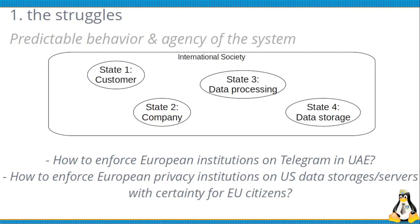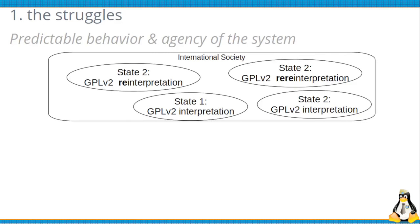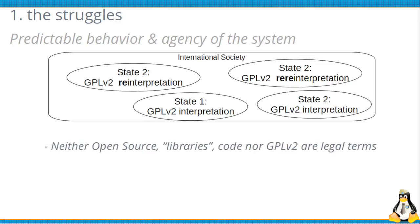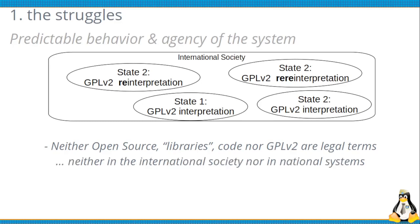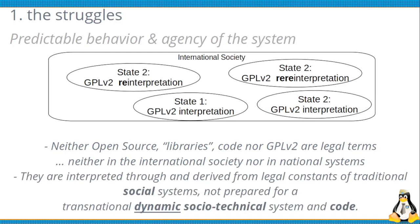We can tackle each one of these individually, but finally there's an architectural flaw. It's comparable to how GPL version 2 can be interpreted differently in different states, and also differently within a single state, because these are not precise legal terms — they are ambiguous and can be interpreted in different ways by a judge. They are not integral to any state, and they are interpreted and derived from the legal constructs of the traditional system. They are not prepared for the transnational dynamic socio-technical system, which has much more dynamics, is persistently developing, and doesn't have the passive integrated development of society. So if we have a well-established precedent on day one, by day two everything can have changed, and the system needs to start again from zero.